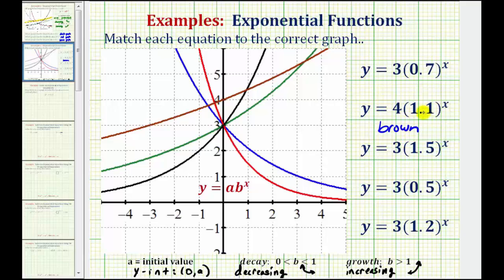Looking at the four remaining equations, let's find the two that represent exponential decay, meaning the value of b is between zero and one. Notice the first equation would be exponential decay because b is equal to 0.7, and another equation because b is equal to 0.5. Notice how the values of a are the same, so they both have a y-intercept of positive three, and they're both exponential decay.